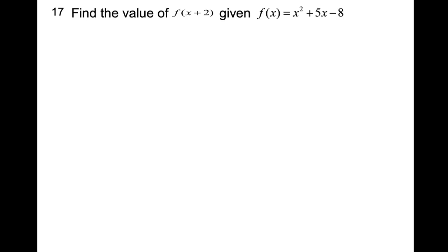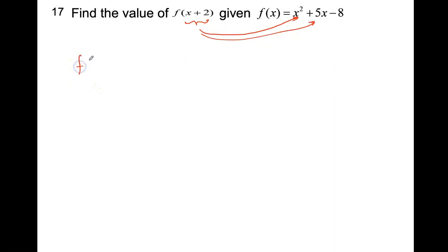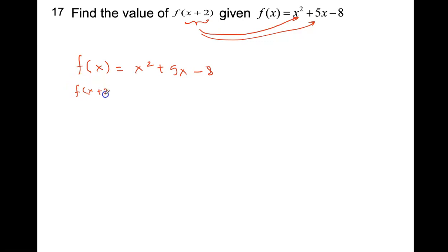Now find the value of f of x plus 2 given f of x equals x squared plus 5x minus 8. The procedure is still the same: wherever you see x, replace it with the entire quantity x plus 2. So f of x plus 2 becomes x plus 2 whole squared, plus 5 times x plus 2, minus 8. The value of x has been changed to x plus 2 throughout.